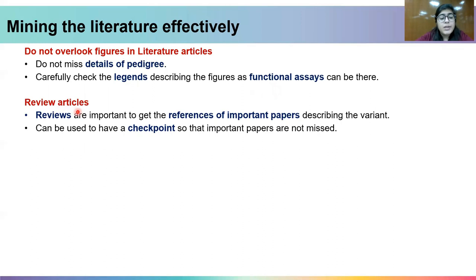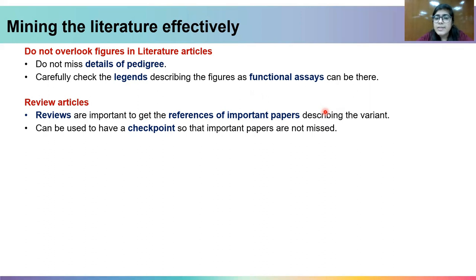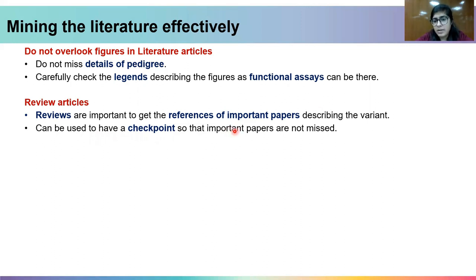Review articles are very important for getting references to important papers describing a particular variant. However, when you find important information such as a functional study in a review article, you should not cite the review article itself. Rather, go back to the important references and fetch the relevant information to cite the original paper. Reviews can also serve as a checkpoint to ensure that important papers are not missed, especially when the review you are reading is very recent.